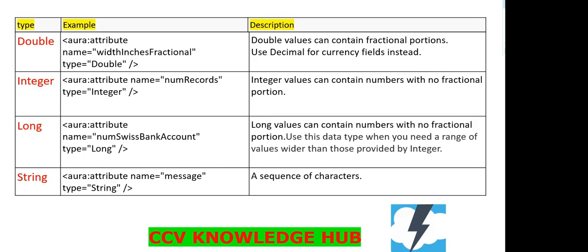The next one is Double. Double values can also contain fractional portions. Use Decimal instead of Double for currency fields. The syntax is: aura:attribute name equal to some field name, type equal to Double.